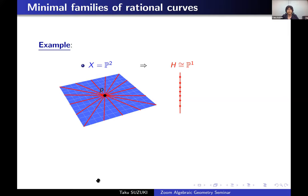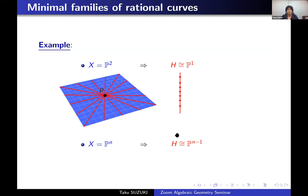I give some examples of minimal families of rational curves. The simplest example is where X is the projective plane P2. In this case, lines are minimal rational curves, and each line on P2 passing through a fixed point corresponds to a point of a projective line. So the family H is isomorphic to a projective line. More generally, if X is a projective space of dimension N, then H is isomorphic to a projective space of dimension N−1.